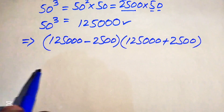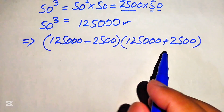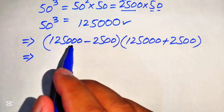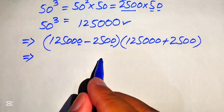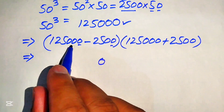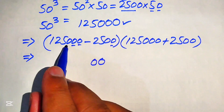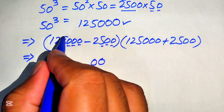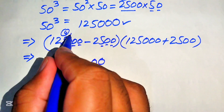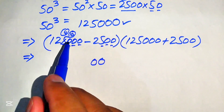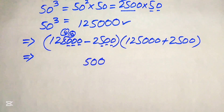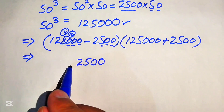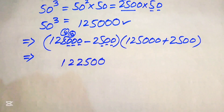Our next step is to subtract these two values and add these two values, then multiply the resulting answers. Subtracting: 0 minus 0 is 0, 0 minus 0 is 0, then 0 minus 5 requires borrowing — borrow 1 making it 4 and 10, so 10 minus 5 is 5, 4 minus 2 is 2, and we get 1. So 125,000 minus 2,500 equals 122,500.